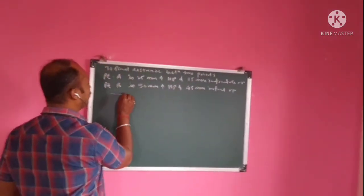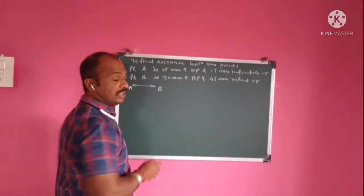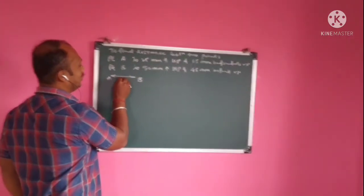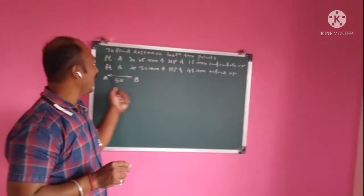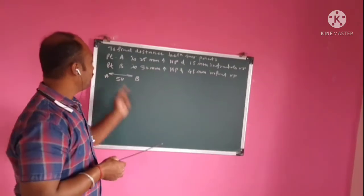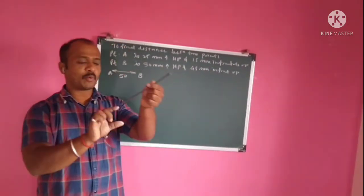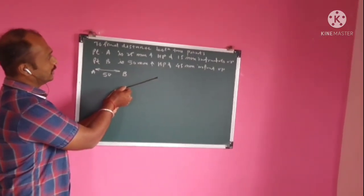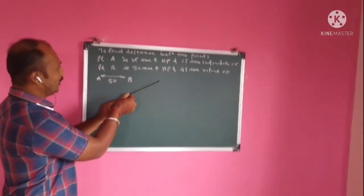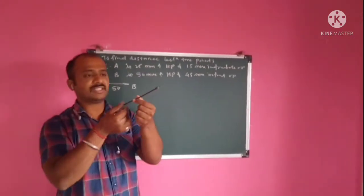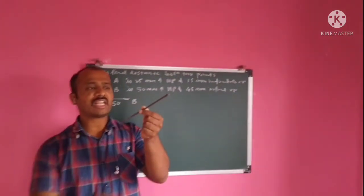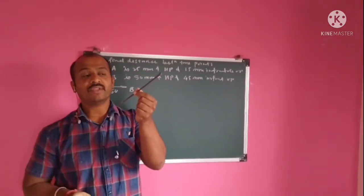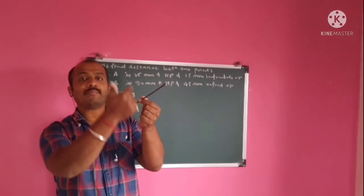The distance between the projectors of A and B is 50 mm. Since both the distances of the two points from HP and VP are different, this line is not parallel to VP or HP. Therefore, the true length will not appear in the front view or the top view.